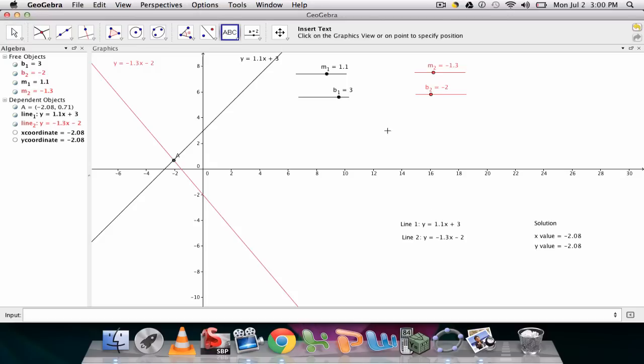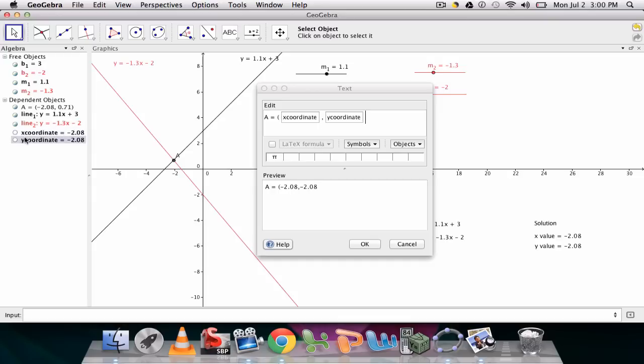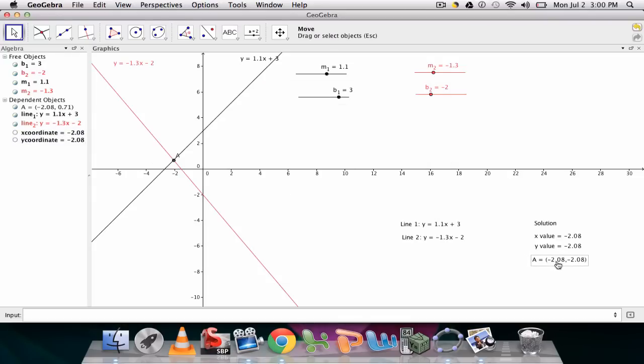And you can keep going with this. Maybe this is not helping students. So you can type in A equals, and then you can click, x coordinate, comma, y coordinate. Hit okay. And this might help students make that connection that this point really is a solution with both an x and a y value. And you can see that.